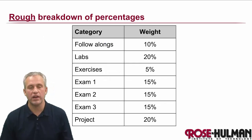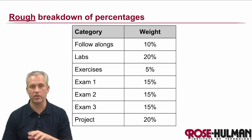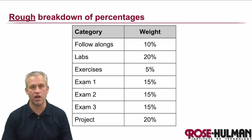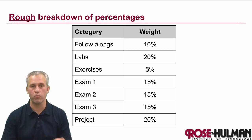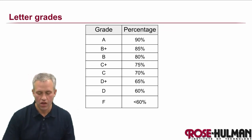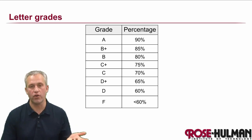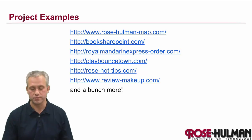As far as the breakdown of weights, here's a rough approximation. There will be a couple of exams in the course, and you can see how much I value the project — it's weighted more than anything else. Following a typical Rose-Hulman scale for letter grades: 90, 85, 80 — nothing surprising there.